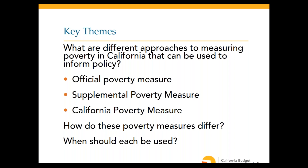We'll focus on the three poverty measures most widely available for measuring poverty in California: the Official Poverty Measure (OPM), the Supplemental Poverty Measure (SPM), and the California Poverty Measure (CPM). We'll go over how these measures differ from each other, how each works, and importantly, when each should be used in ways that can be helpful for informing policy to address poverty and economic insecurity.